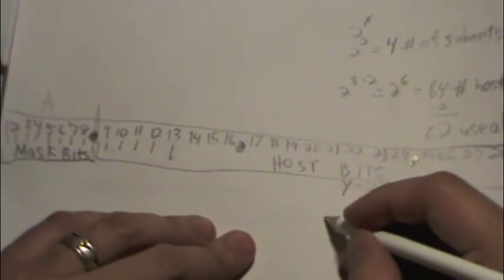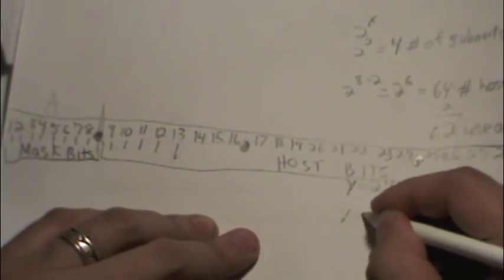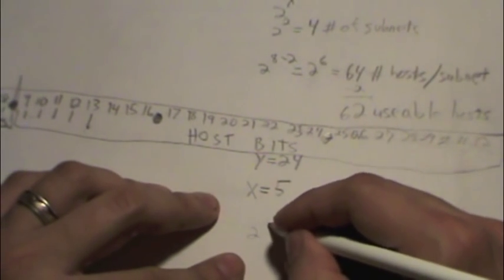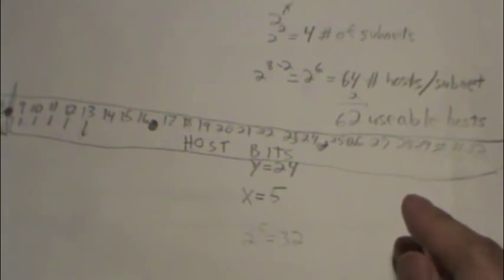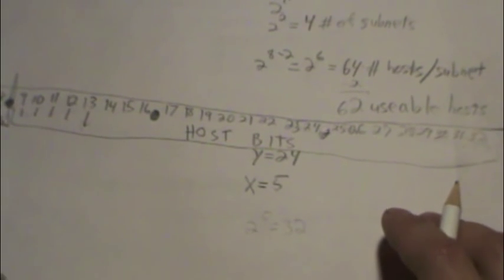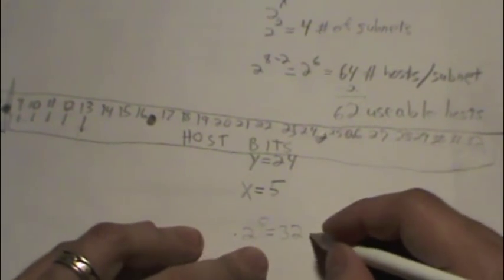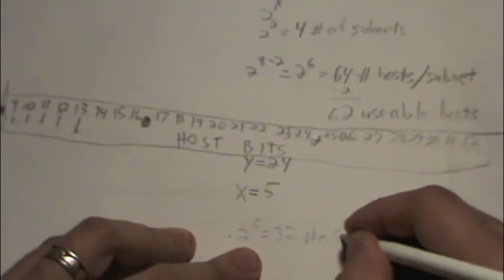So it looks like x equals 5. We take 2 to the 5th, that equals 32. That's going to give you the number of subnets created.